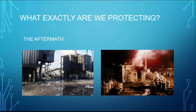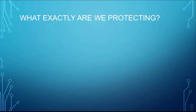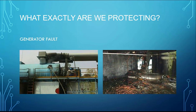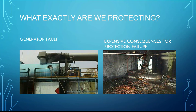This one here appears to be a distribution transformer in flames. These are the kinds of things that we are protecting, because as a result you're going to have fire and that will destroy the equipment that is so important for the system. We are protecting large generators in case of a fault, and important insulation that, if damaged, may result in high cost for repair.